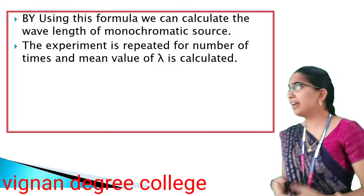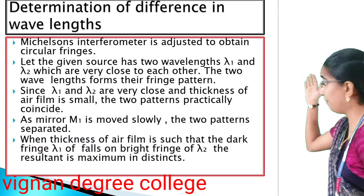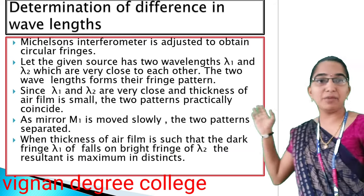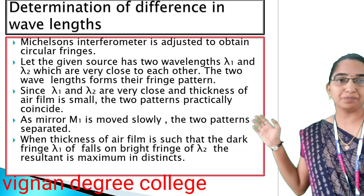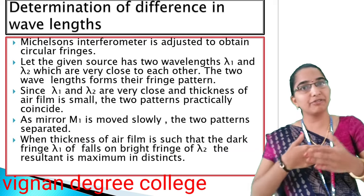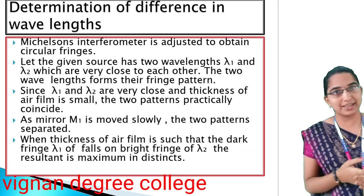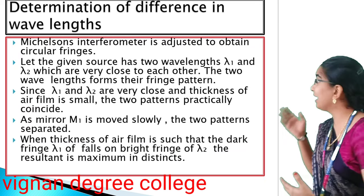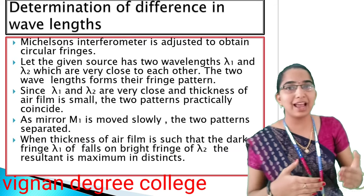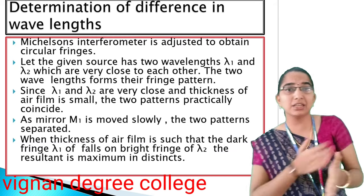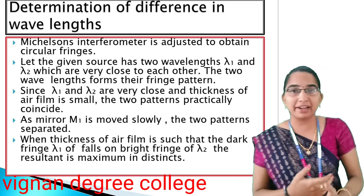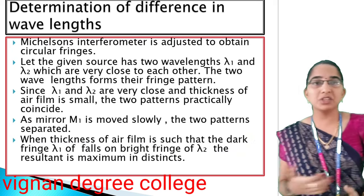The second application is Determination of Difference in Wavelength. The Michelson interferometer is adjusted to obtain circular fringes. Consider a source with two wavelengths, λ1 and λ2, which are very close to each other. The two wavelengths form their own fringe patterns.